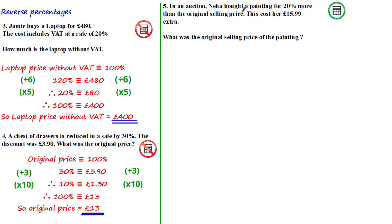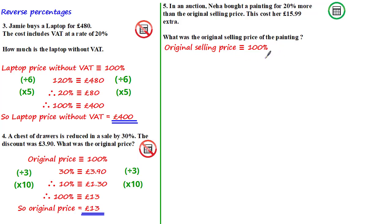In an auction, Neha bought a painting for 20% more than the original selling price; this cost her £15.99 extra. What was the original selling price? Reading carefully, the 20% more she paid is equivalent to the £15.99 extra. So let's say the original selling price is equivalent to 100%, and from what we're told, 20% is equivalent to £15.99. Multiplying both sides by 5 gives 100% equivalent to £79.95, so the original selling price is £79.95.